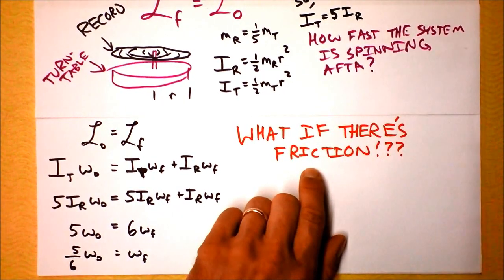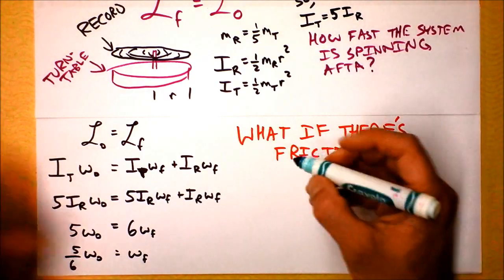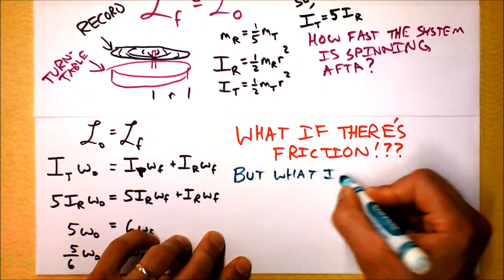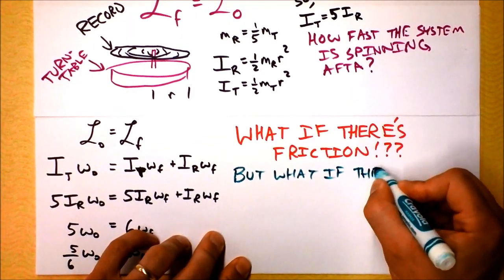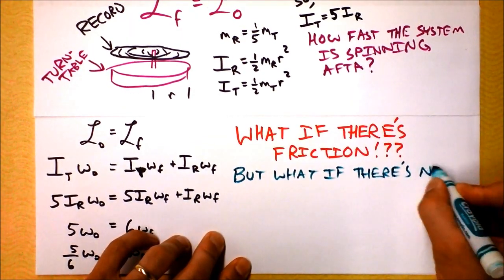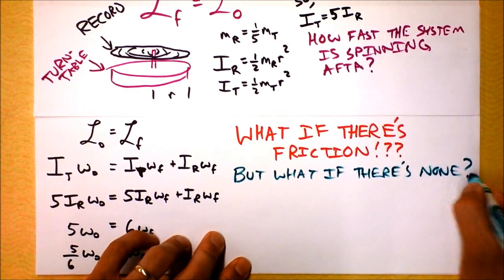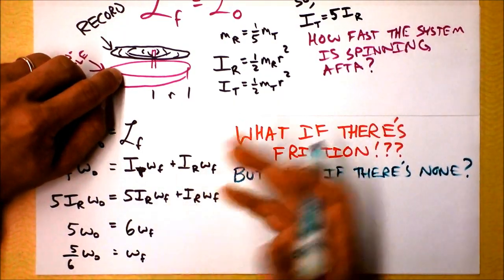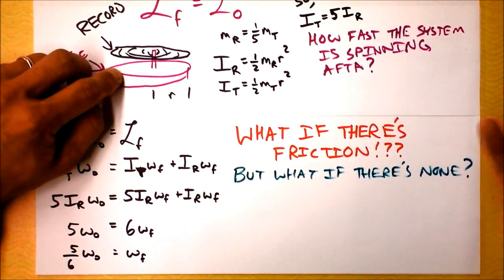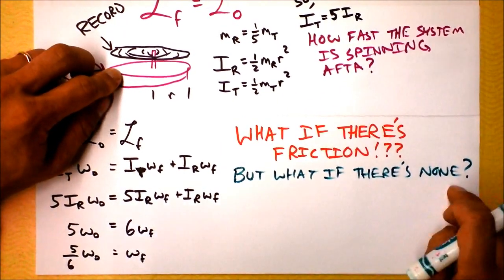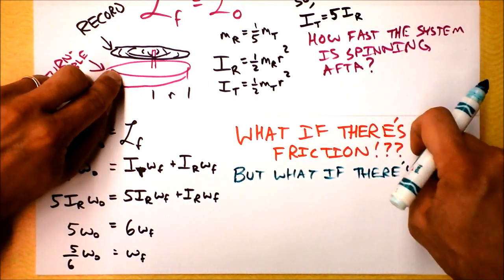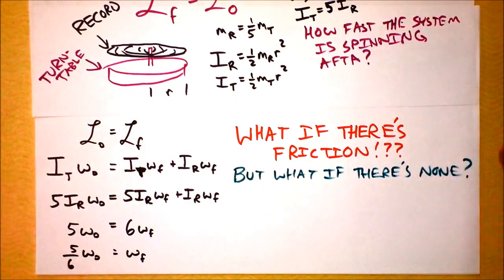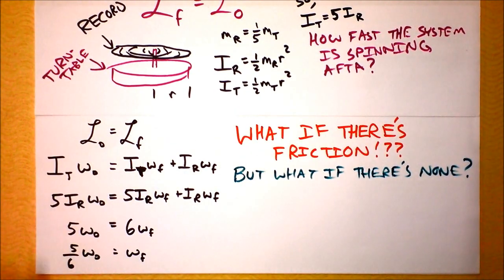Are you thinking about that? What if there's none? If there's no friction, then the record will never collide with the turntable because they won't come to a common velocity. It's as if they never interacted, if there's no friction at all. So in fact, friction, kinetic friction, is the way that the collision takes place.